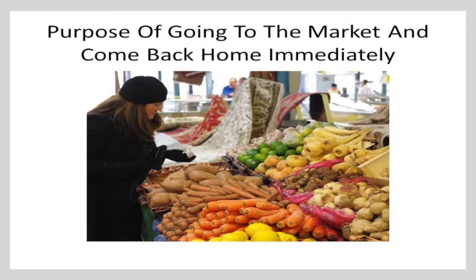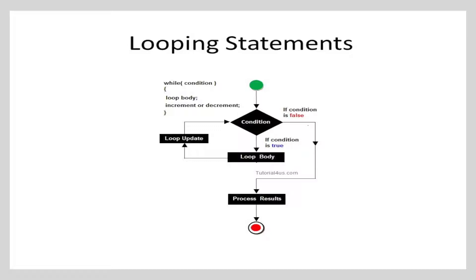Let us restate these problems in another way. Suppose your mom asks you to go to market and get potato, tomato, onion, beans and carrot. You bought potato and tomato, and when you are looking for onion, you get a phone call from your mom saying that an important guest has come home and wants to leave immediately to catch a train. He wants to meet you before leaving. What would you do? You will break the purpose of going to the market and come back home immediately. This is what break does — it comes out of the loop and continues to execute the statements after the looping statement.